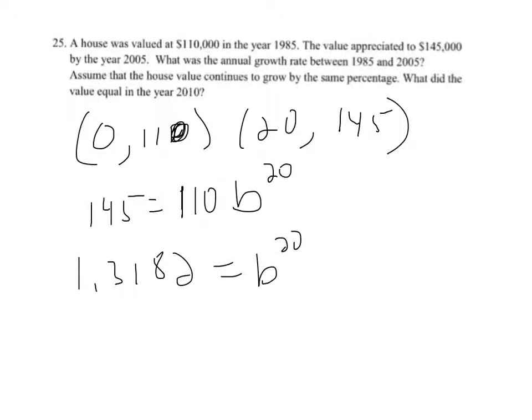So then I'm going to take the 20th root of both sides. Now your calculator does have a key where you can specify that in. But all I ever do is I'll take that number. In fact, I'm going to leave the whole thing in my calculator, and I'm going to raise it to the 1 divided by 20.